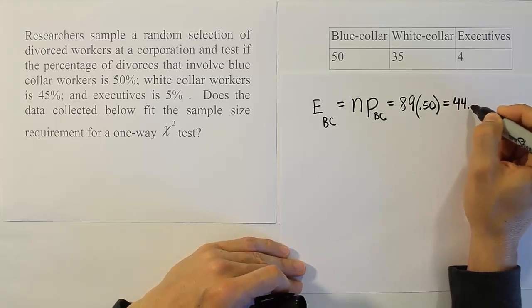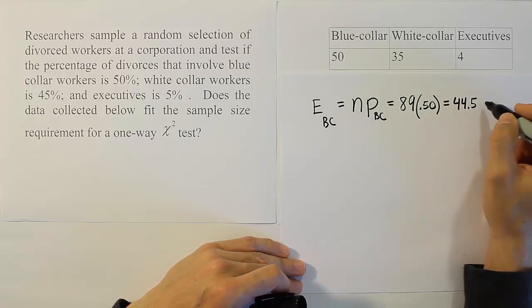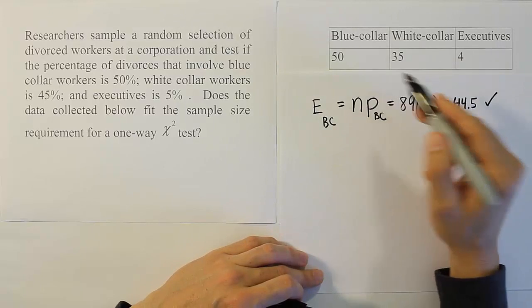At that point, it's clearly greater than 5, and since that's greater than 5, it meets the requirement. So the first cell is okay. The expected value is large enough.